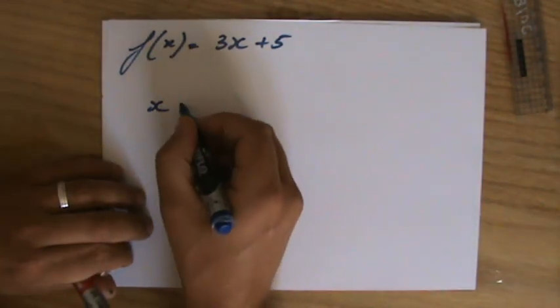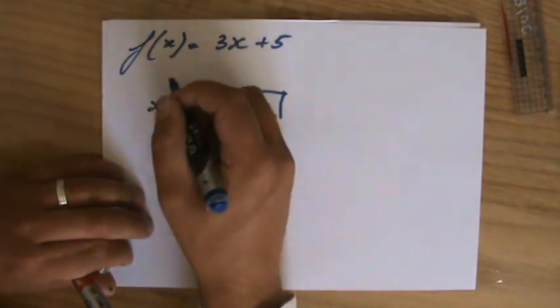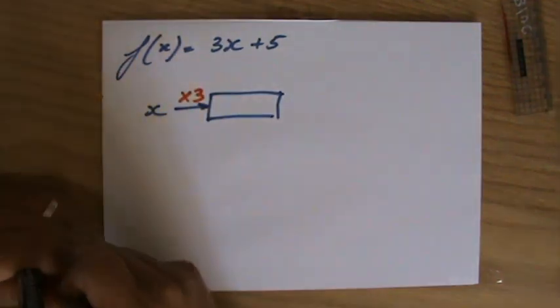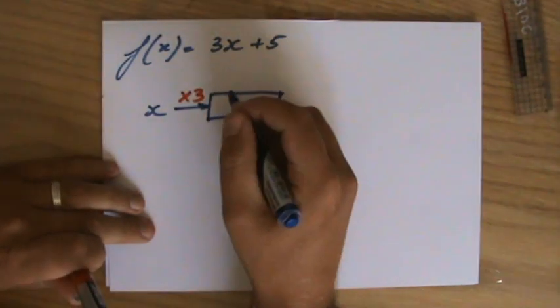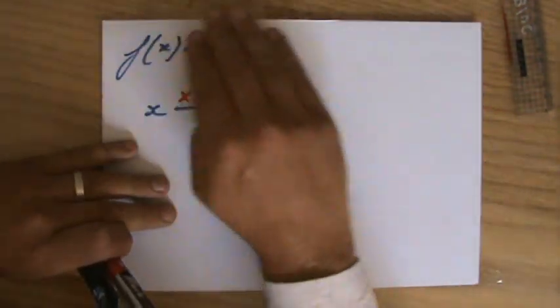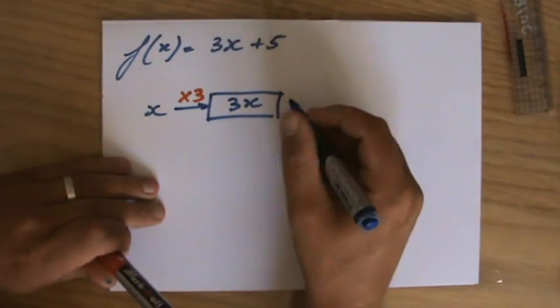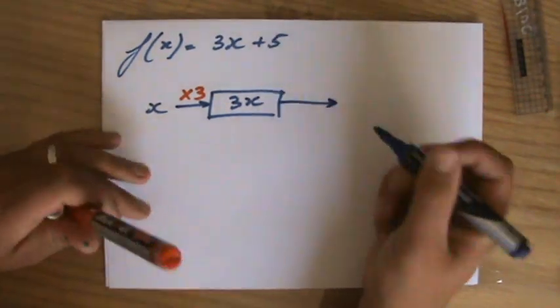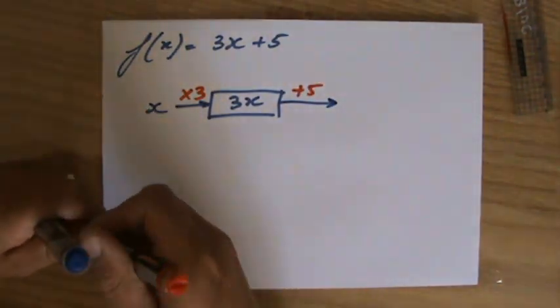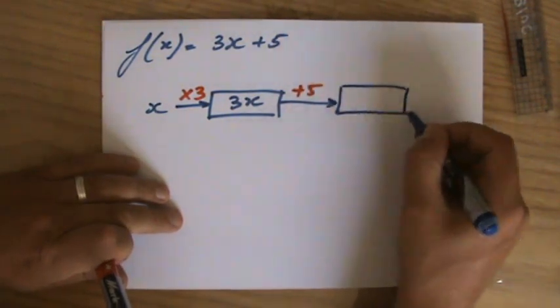Well indeed, the first thing they do is they times it by 3. Times by 3, and what do I get when I times x by 3? Indeed I get 3x. Now what is the second thing in terms of BODMAS they do with that particular value? Then indeed the second thing they do is adding 5 to it, and then we have the function of 3x plus 5.